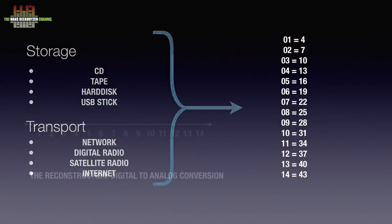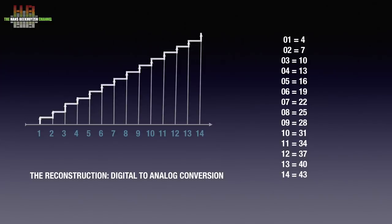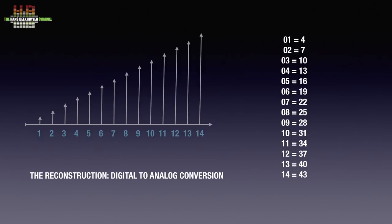On playback the table of measurements is read and subsequently used to plot the values. Due to illustrations by misinformed marketeers, some think that this reconstruction leads to a staircase waveform. That might be the case if there was no reconstruction filter, as published by Claude Shannon in 1949. This reconstruction filter limits the bandwidth to half the sampling rate, identical to what happened during the analog to digital conversion. The bandwidth limitation slows down the signal so that it is too slow to create stair waves. The system will be able to follow the shape of a 20 kHz waveform but nothing more. Consequently the plotted voltages will result in the straight line we started with.